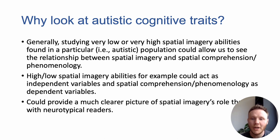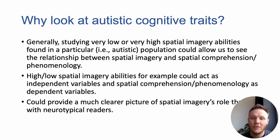But why look at autistic cognitive traits in this context? Generally, studying very low or very high spatial imagery abilities found in a particular population can allow us to see the relationship to spatial comprehension and spatial phenomenology. This could provide a much clearer picture about spatial imagery in reading than with neurotypical readers, where its effects might be less noticeable.